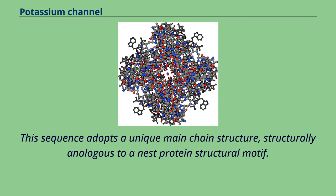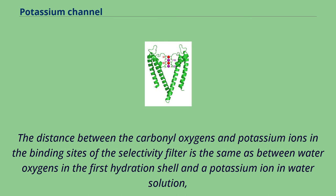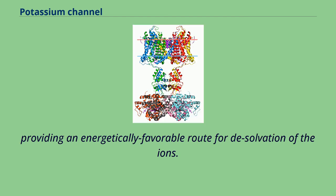This sequence adopts a unique main chain structure, structurally analogous to a nest protein structural motif. The four sets of electronegative carbonyl oxygen atoms are aligned toward the center of the filter pore, forming a square anti-prism similar to a water-solvating shell around each potassium binding site. The distance between the carbonyl oxygens and potassium ions in the selectivity filter is the same as between water oxygens in the first hydration shell and a potassium ion in solution, providing an energetically favorable route for dissolvation of the ions.